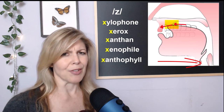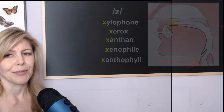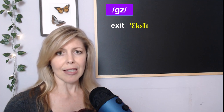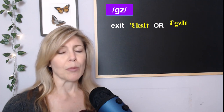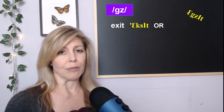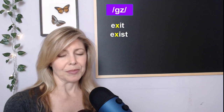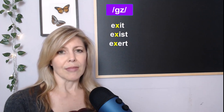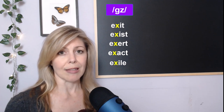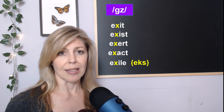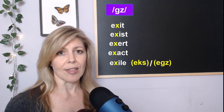You probably won't use those last three very often, but it is good to practice. Next, we have the GZ sound — both of these are voiced. This first word, you can say two ways: exit with KS, or exit with GZ. They're both acceptable, so whichever one is easiest for you to pronounce. The next ones: exist, exert, exact. And this one we also have two options — you can say exile with unvoiced KS, or voiced exile.